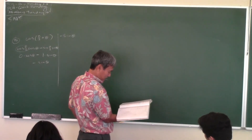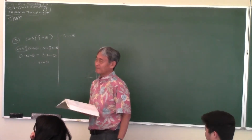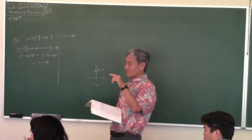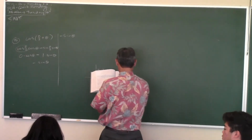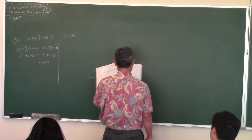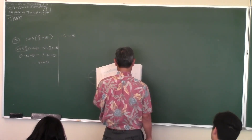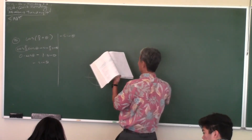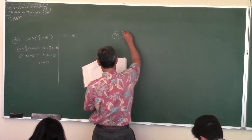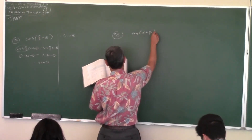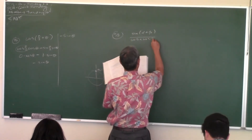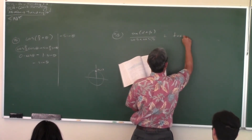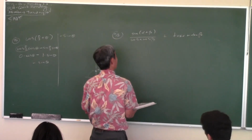Let's look at another one. Tonight's homework is section 8.4, problems 35, 37, and 55 through 57. I'll do number 58 as an example — I don't want to do the same one as the homework. Prove that sine of (α + β) over (cosine α times cosine β) equals tangent α plus tangent β.